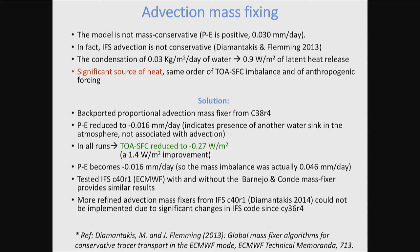We implemented the simplest possible fixer we could - a proportional fixer. That was easy to write ourselves, and later we backported one from cycle 38. We could not backport more sophisticated ones because the code structure of IFS has changed too much. Doing this, P minus E was reduced - actually became negative but at least half of what it was before in amplitude. The residual of minus 0.016 is due probably to some other numerical things. The main point is we reduced it significantly, and we had a significant improvement in the top of the atmosphere minus surface imbalance - actually 1.4 W/m², corresponding to this change in the mass balance.